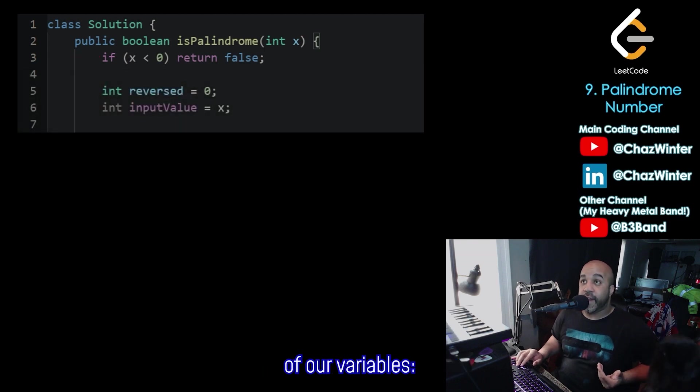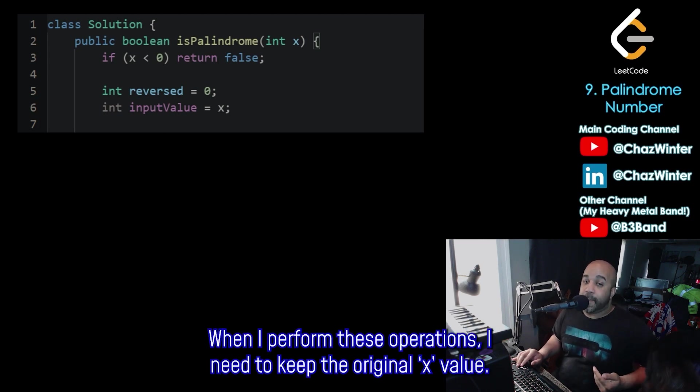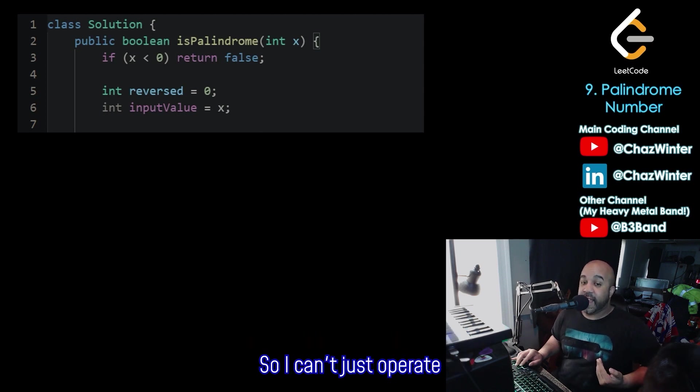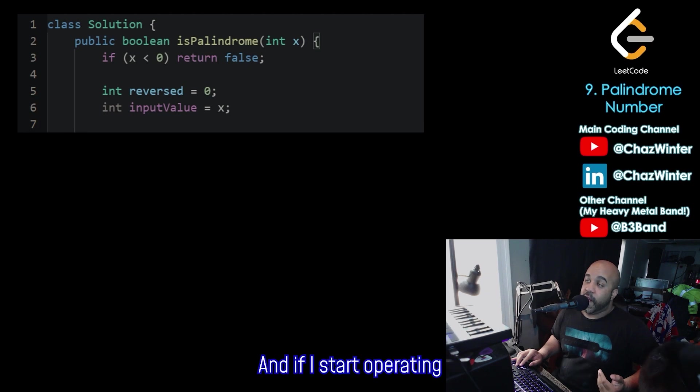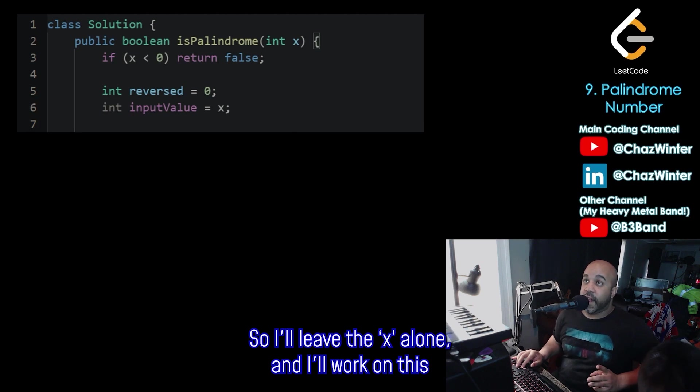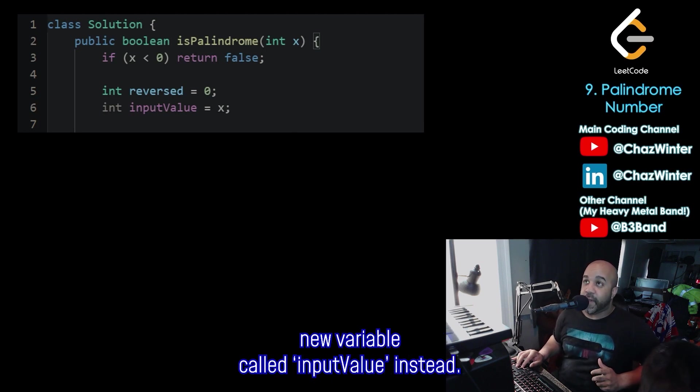Right next, we're going to create two of our variables, one integer, named reverse, that we start at zero, and then input value, which we set to x. When I perform these operations, I need to keep the original x value. So I can't just operate directly on that x. Because when I'm finished, I need to compare the original x to the result of my algorithm. And if I start operating directly on the x, I'm going to lose the original value. So I'll leave the x alone, and I'll work on this new variable called input value instead.